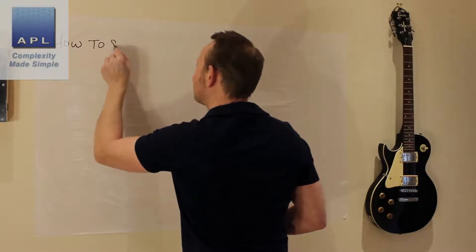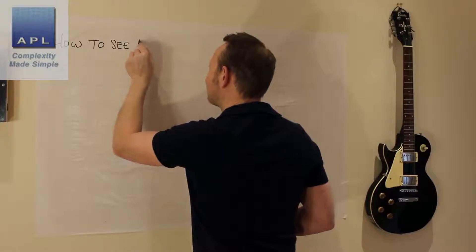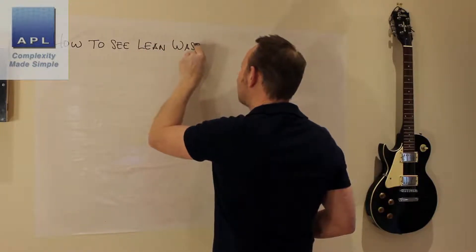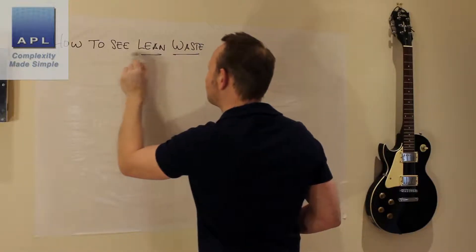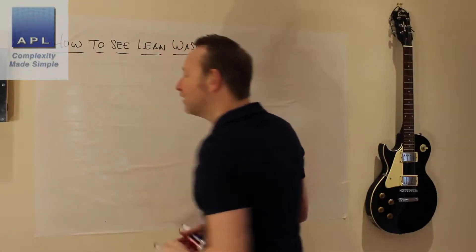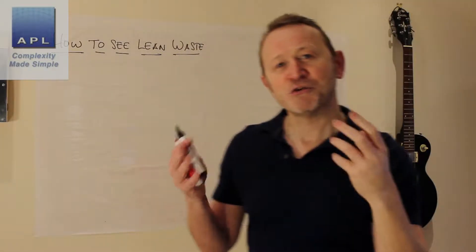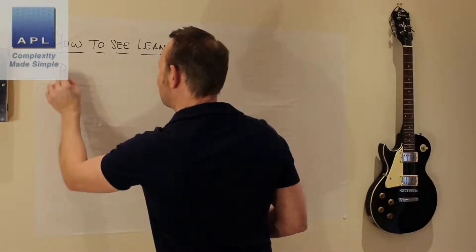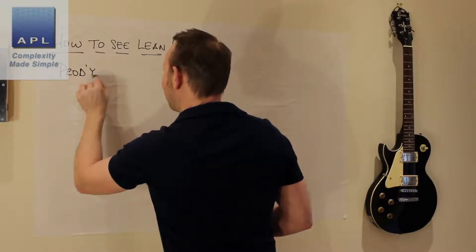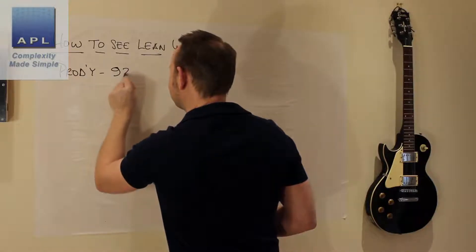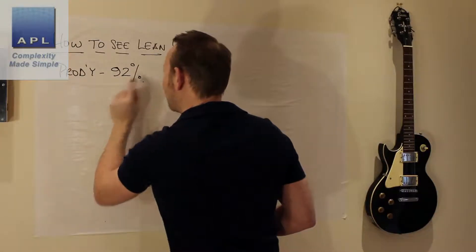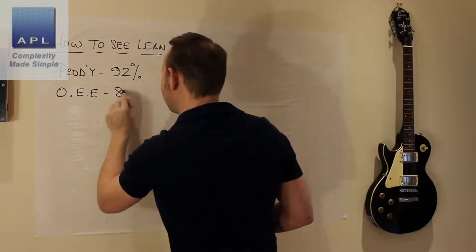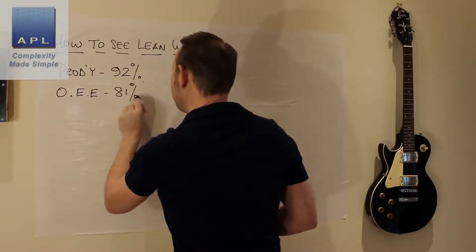Not necessarily the seven wastes individually, but how to just quickly quantify how much waste and therefore how much opportunity you have inside your business. You often have business measures — things like productivity or efficiency — and they often look really good. You might be measuring overall equipment effectiveness, and that might be nice and high as well, let's be optimistic: 81%.